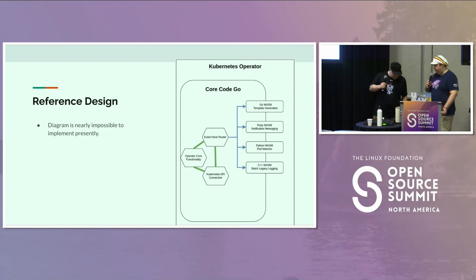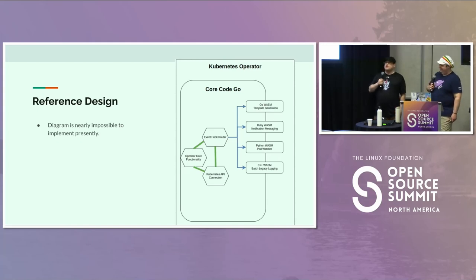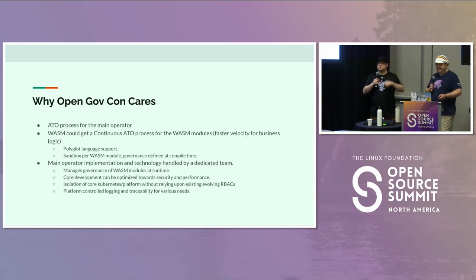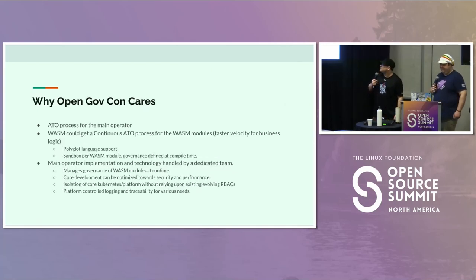By the way — what is ATO? That stands for Authorized to Operate. You have to go through an authorization officer and go through a lot of process. Austin Bryan from Defense Unicorns is back there if you have any questions — he's been through it once or twice.